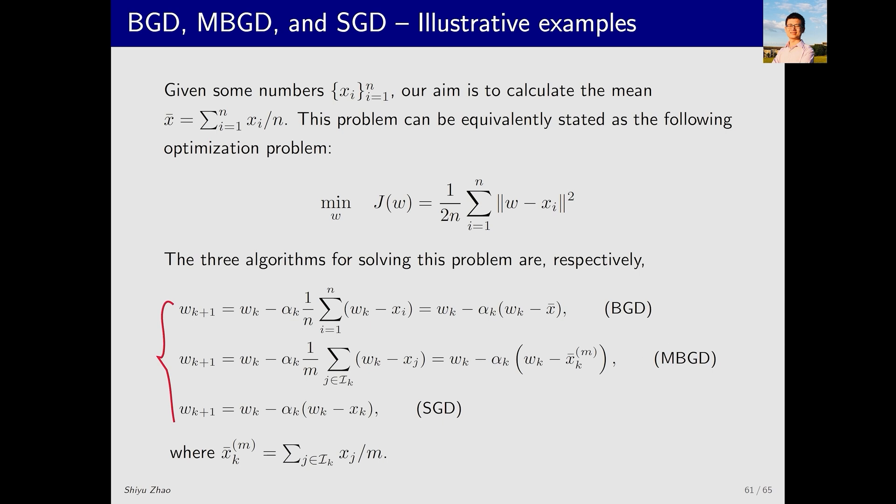Let's start with BGD. Here is its gradient. In BGD, we sum W_k N times and then average, which simplifies to W_k. For X_i, we sum it N times and then average, resulting in X-bar. The only difference between BGD, MBGD, and SGD lies in the latter part.